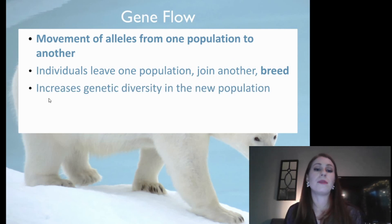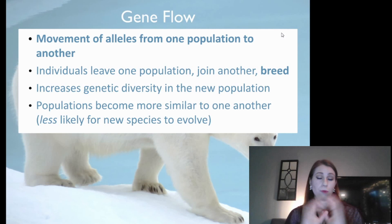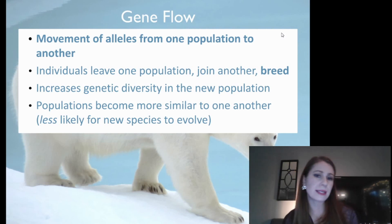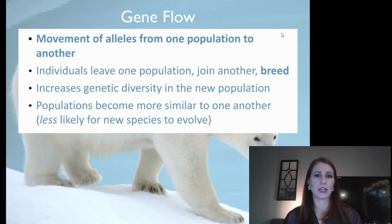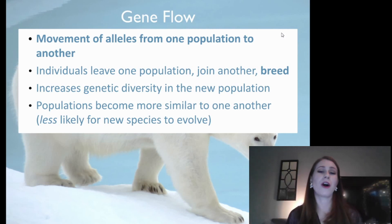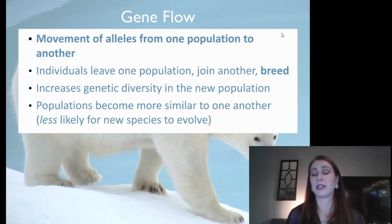Gene flow increases genetic diversity in the new population because you have new genes and new alleles joining it — usually a good thing. Populations overall become more similar to one another. Two hundred years ago, people couldn't travel, so people looked very different from each other and stayed within the same groups — we call that homogeneous. But nowadays people can travel the world, move to new populations, and live in new places. We overall become a little bit more similar to each other, which means it's less likely for a new species to evolve because we're sharing all of our alleles.